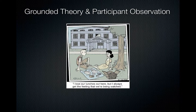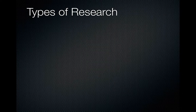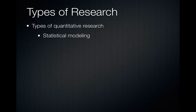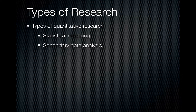When we talk about grounded theory and participant observation, this is what a lot of sociologists do. I first wanted to lay out the types of research, just so you're clear where we've been in the semester. The types of quantitative research we've worked with are statistical modeling and secondary data analysis. The secondary data analysis came with using the GSS for your quantitative papers — that's a data set that's already been collected. Statistical modeling was those charts and graphs you made for the bivariate analysis. There are other types of quantitative research, but these two are the most well-known and they're often connected.